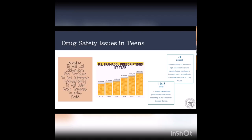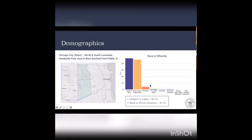All these issues reinforce the importance of being aware and providing safe drug use education in adolescents. The target population I worked with consisted of students coming mainly from the West region of Chicago, including the North and South Lawndale area, Humboldt Park, and East and West Garfield Park. The population in these areas is predominantly Hispanic and Black — 48.1% Hispanic or Latino and 46.1% Black or African American.